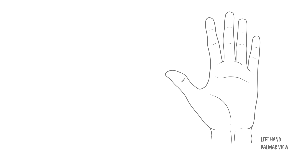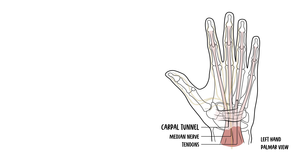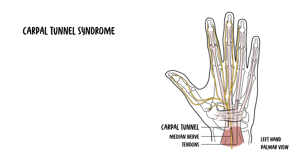Hello, in this video we're going to talk about the carpal tunnel and also talk about something called carpal tunnel syndrome. The carpal tunnel is a narrow passageway found on the anterior portion of the wrist. It serves as the entrance to the palm for several tendons and the median nerve. Carpal tunnel syndrome is a condition that occurs when the median nerve is compressed within the carpal tunnel.